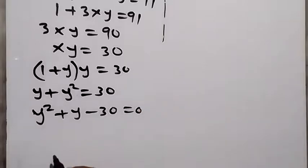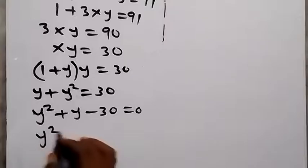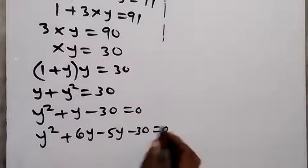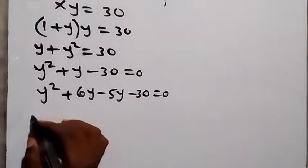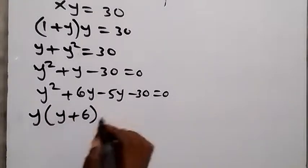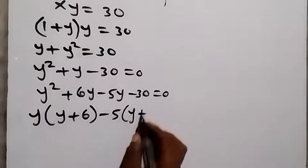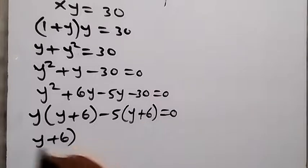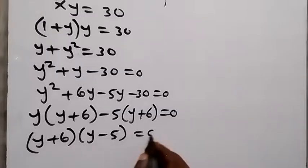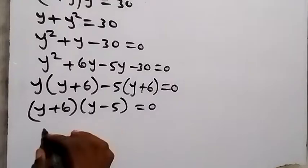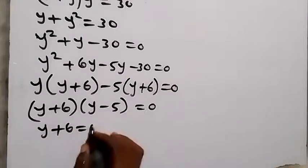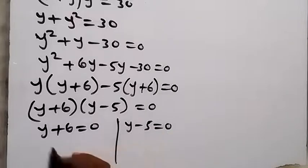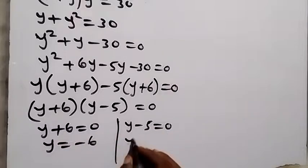This is a quadratic equation we can factorize. We write it as y squared plus 6y minus 5y minus 30 equals 0. Grouping: y times y plus 6, minus 5 times y plus 6 equals 0. So y plus 6 multiplied by y minus 5 equals 0. Therefore either y plus 6 equals 0, giving y equals minus 6, or y minus 5 equals 0, giving y equals 5.